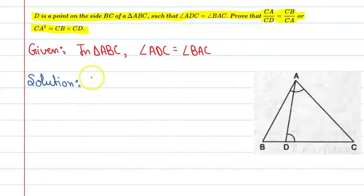In triangle ABC and DAC, we have angle BAC is equal to angle ADC. It is given.